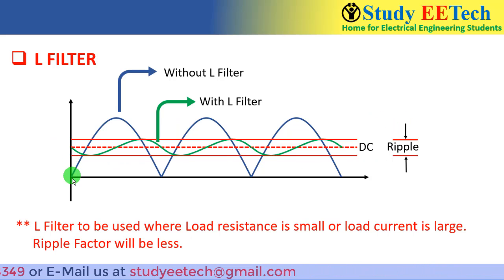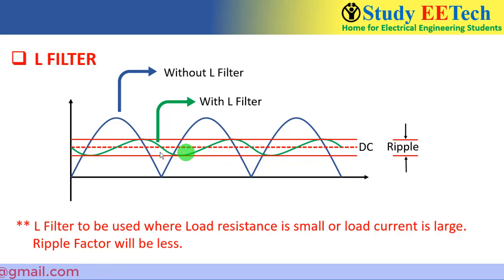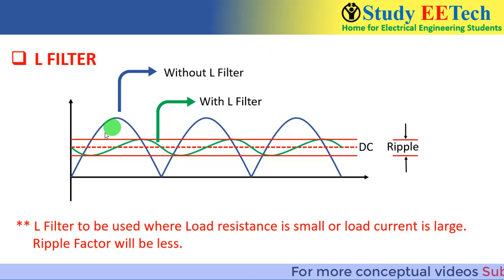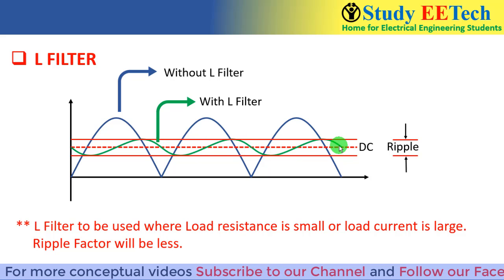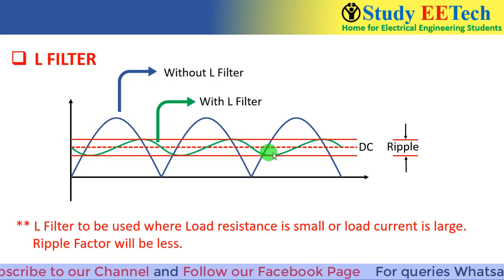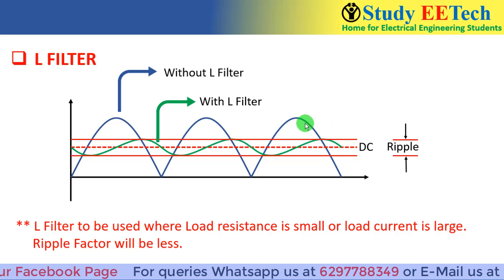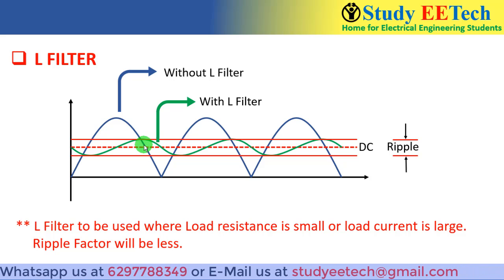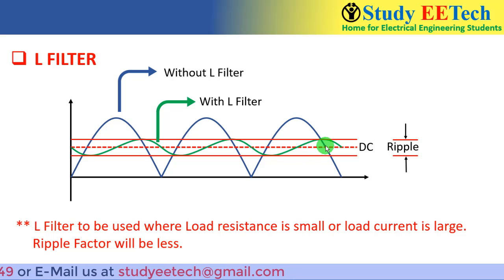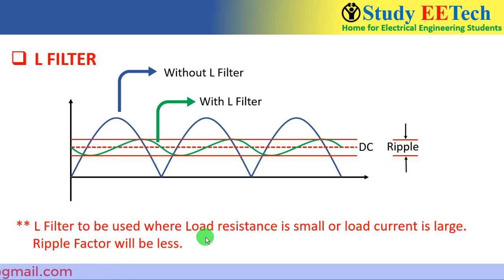Looking at the waveforms: the blue line is the pulsating DC from the rectifier output — the output without the inductor filter. When we use the inductor filter, the ripple parts are dropped at L, so the output voltage at the load is not perfect DC but something closer to the dotted line. Increasing the L value reduces the ripple further, bringing the output even closer to perfect DC.